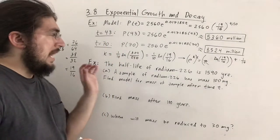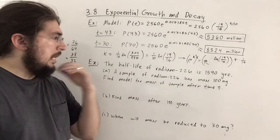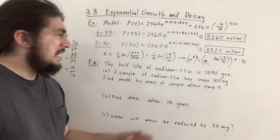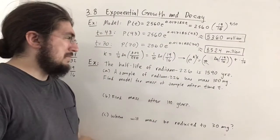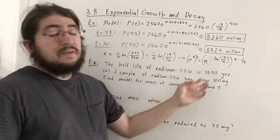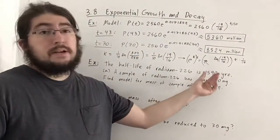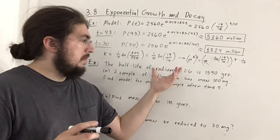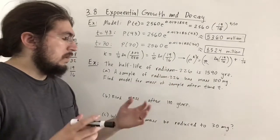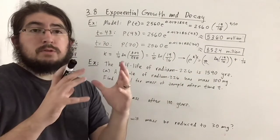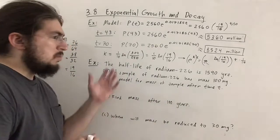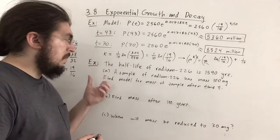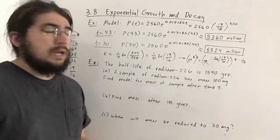Now for this example: we're given the half-life of radium-226, which is 1590 years. That means after 1590 years, however much you have of this chemical will be reduced to half. It just decomposes like that. We want to find a model for a sample with an initial mass of 100 milligrams.